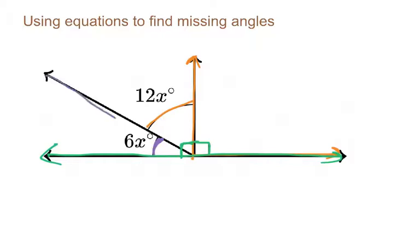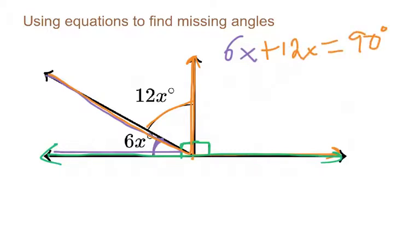So this purple angle here is 6x, so we take 6x plus this angle here, which is 12x, that should be equal to 90 degrees. At this point you use your properties of equations to solve this equation. If you notice on the left side here, we can actually simplify this. Always look to see if you can simplify either side first. In this case, 6x plus 12x, we know that's 18x and that equals 90.